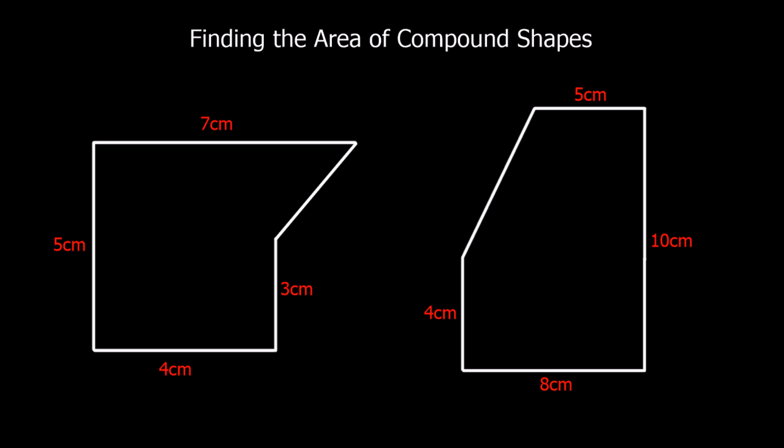In this video we're going to look at compound shapes. Compound shapes are shapes that are made up of other shapes stuck together. To find the area, we're going to have to cut the compound shapes up into smaller shapes that we know how to work out.